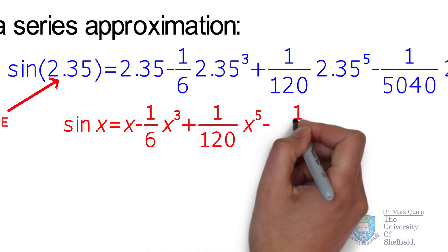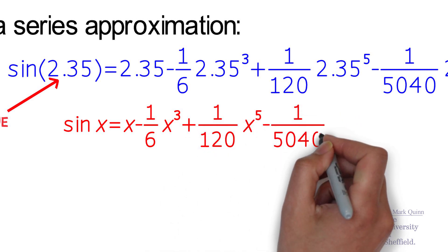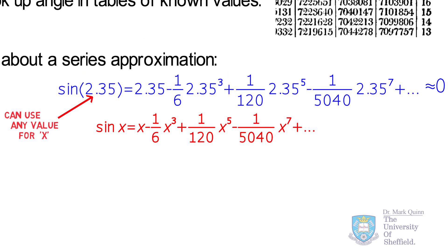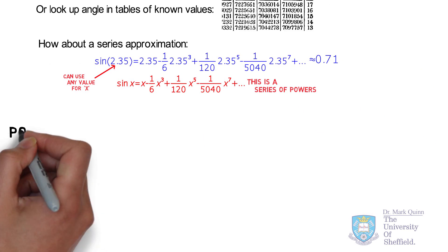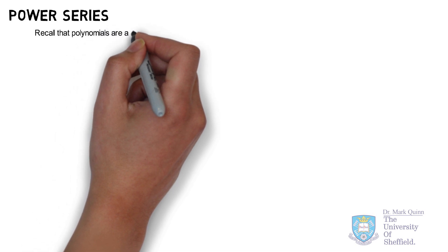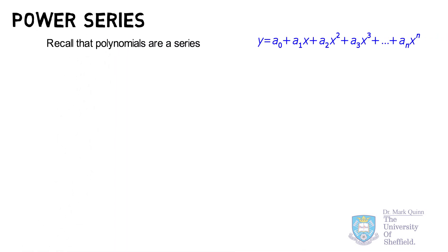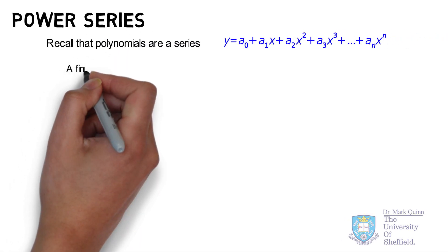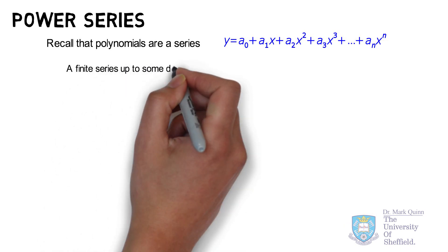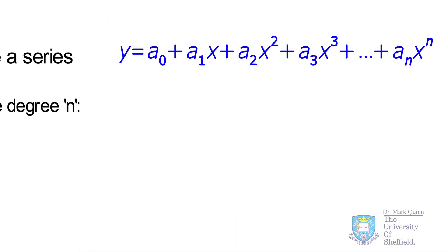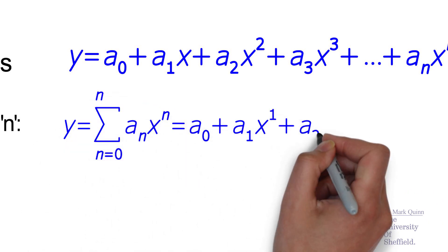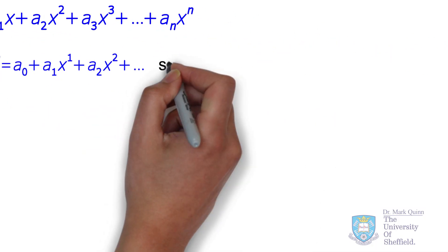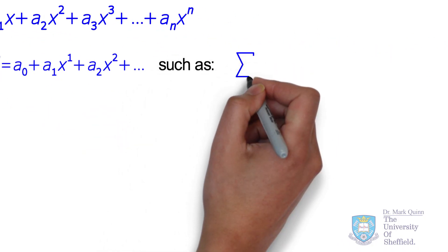We can see quite easily that this approximation is a series of powers. Each power term is weighted by some fraction such as 1 over 6 or 1 over 20. Recall that polynomials are a series involving coefficients and powers of x. This is a finite series up to some number of terms n. Writing this as a summation, we start from 0 up to some n power, for example a second degree polynomial such as 3 plus 2x plus x squared.